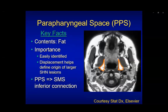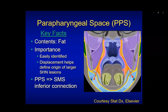The parapharyngeal space is identified as a triangular fat-filled space. There may be some salivary rests here as well, but primarily the contents are fat. It's easily identifiable, and its displacement can help determine where a primary lesion is located. Importantly, it extends posteriorly into the submandibular space, so an infection of the submandibular space can extend into the parapharyngeal space or vice versa.